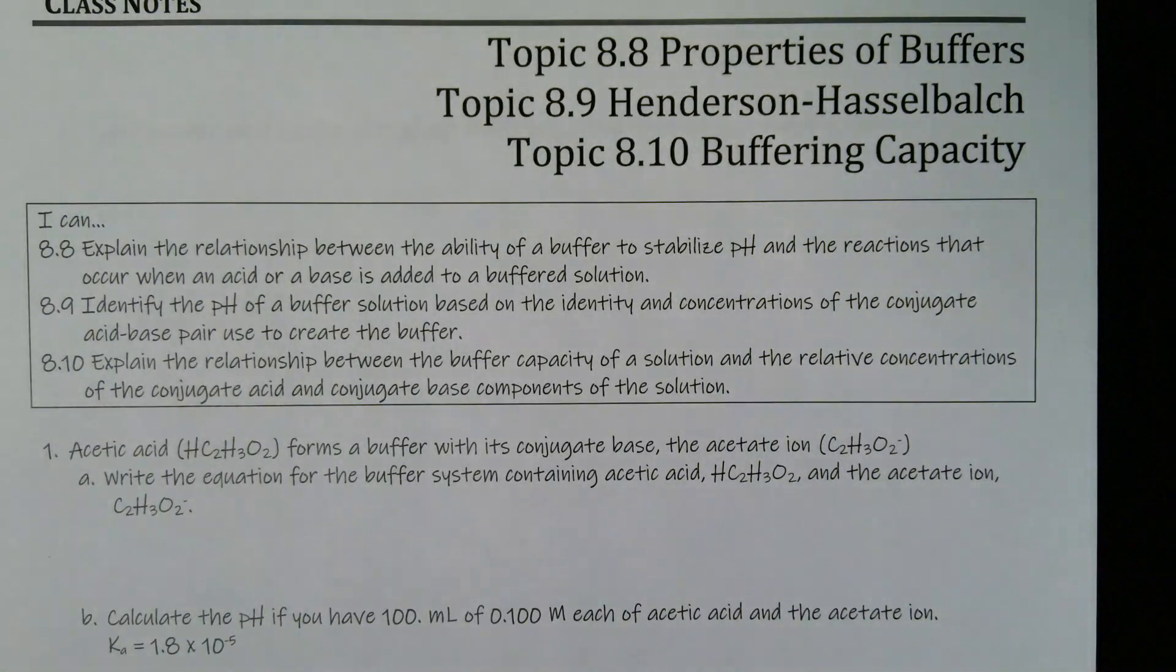Here we're tackling topics 8.8, 8.9, and 8.10. So pretty much we are talking about buffers. And buffers are a solution that will resist the change in pH, meaning that you could add some acid to it, it's not going to decrease too much. You can add some base to it, it's not going to increase too much. It's going to stay pretty much around the same pH. And this is really important, especially when it comes to our blood.